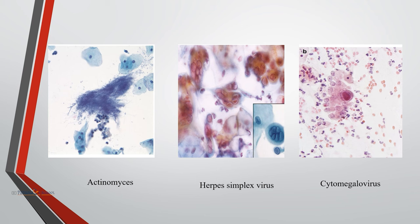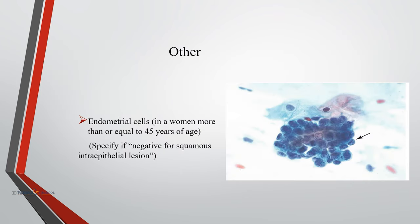In cytomegalovirus infection, there is cellular and nuclear enlargement with large eosinophilic intranuclear inclusions with a prominent halo, as seen in this image. CMV is usually seen in immunocompromised patients.